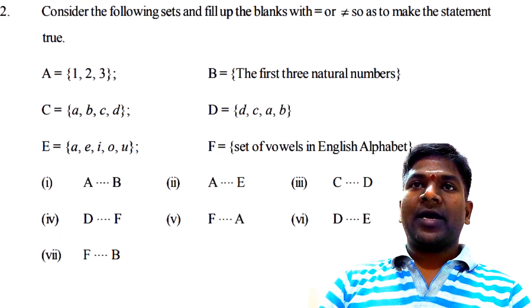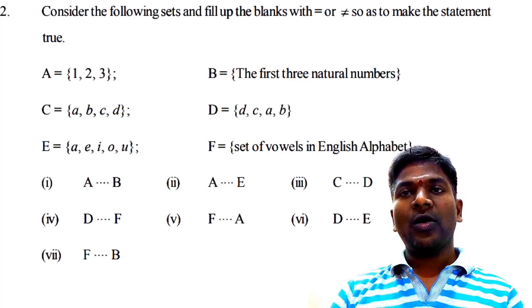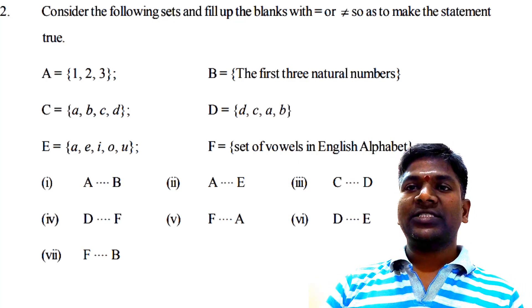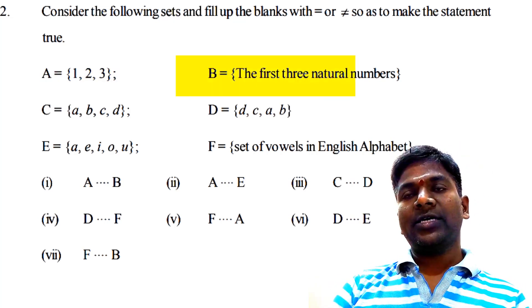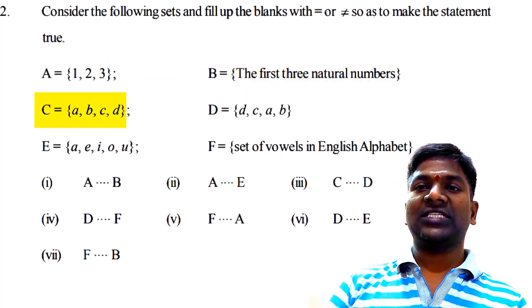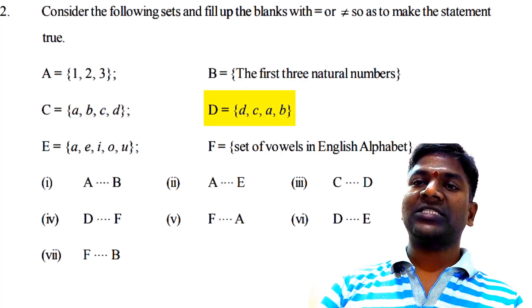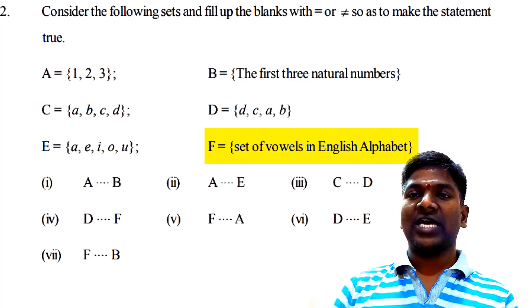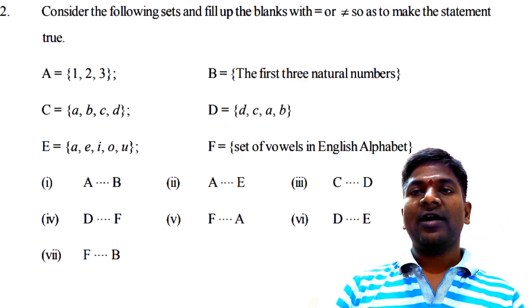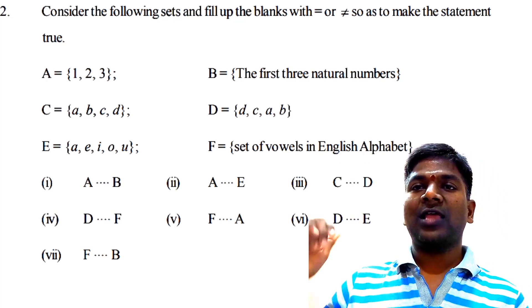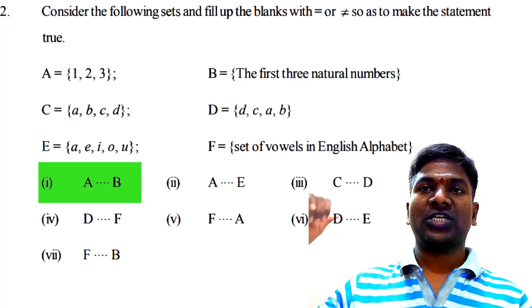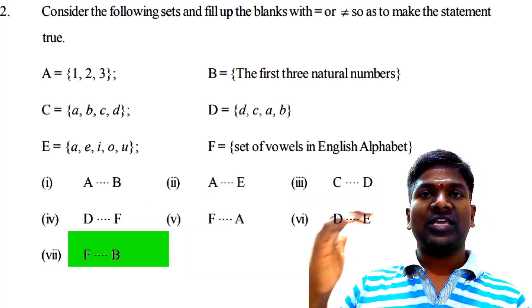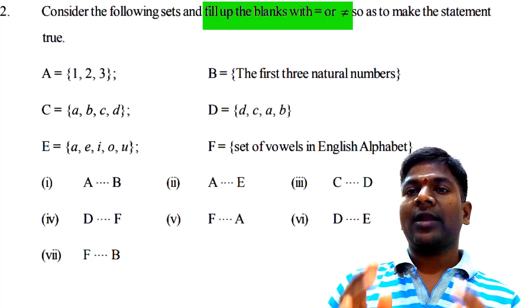Let us see the second question in Exercise 2.3. Consider the following sets and fill in the blanks in the statements given below with 'equal' or 'not equal' so as to make the statements true. Set A = {1, 2, 3}; set B = first three natural numbers; set C = {A, B, C, D}; set D = {D, C, A, B}; set E = {A, E, I, O, U}; and set F = set of vowels in the English alphabet. We have to fill the blanks: A _ B, A _ E, C _ D, D _ F, F _ A, D _ E, and F _ B.